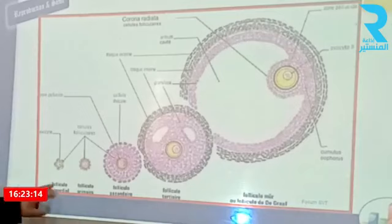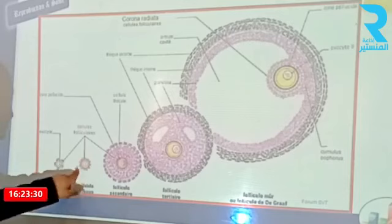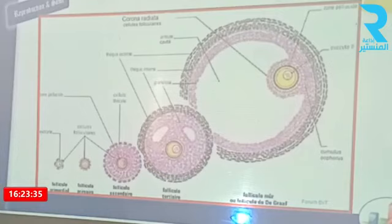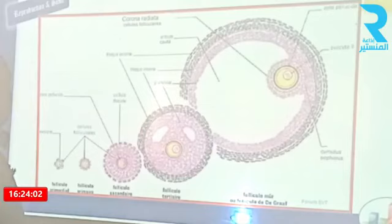Le follicule primordial possède un ovocyte central avec quelques cellules folliculaires aplaties vers l'extérieur. Au niveau du follicule primaire, on note un ovocyte central et une couche de cellules folliculaires. Au niveau des follicules secondaires, la taille devient de plus en plus importante avec un ovocyte central, des cellules folliculaires plus nombreuses et le début d'apparition des cellules des thèques. Le follicule tertiaire, encore appelé follicule cavitaire, présente des cavités. On a une thèque externe de protection et une thèque interne glandulaire, sécrétrice d'hormones.